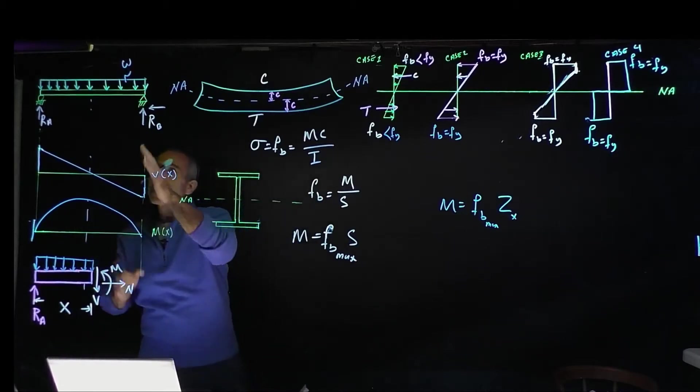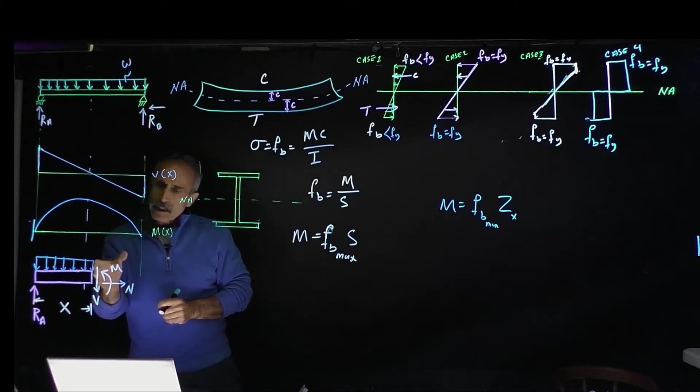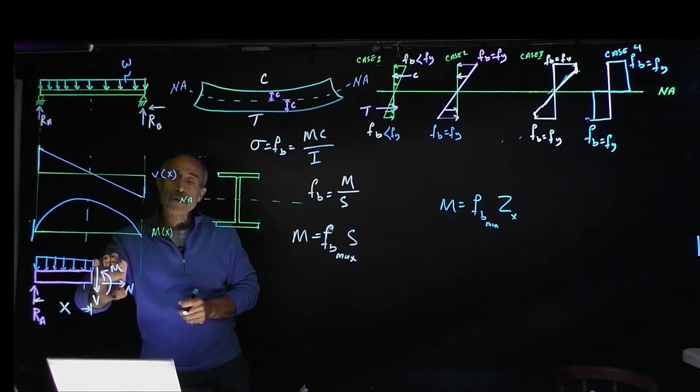What happens if we just cut this beam anywhere we would like to call it X, anywhere between A and B? If we cut it, we can replace it with the internal forces of shear, moment, and axial. Let's focus on this internal moment.